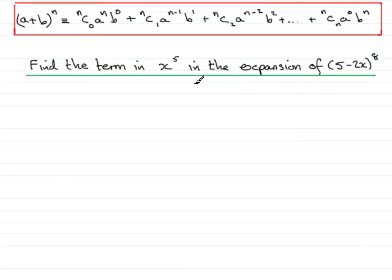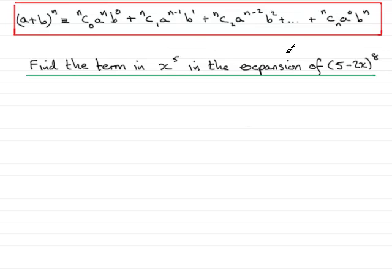In this particular example, I'm asked to find the term in x to the power 5 in the expansion of (5 minus 2x) all to the power 8. What I could do is expand every term and then select the term in x to the power 5, but that's going to be a lot of work and totally unnecessary. What we should be able to do is go straight to that particular term, and that's what I'm going to show you how to do in this tutorial.